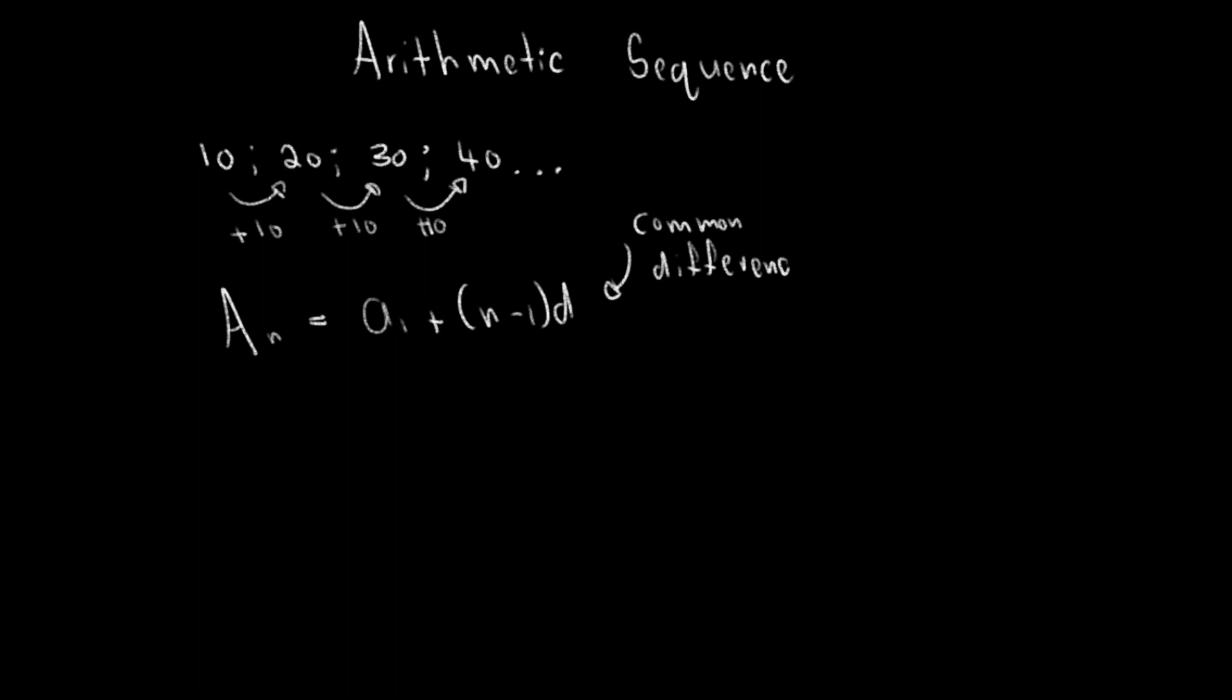It's a common difference. What a common difference is is that when we see the same value getting added or subtracted from a sequence, we can determine that would be the common difference. So let's write it over here: d = 10.